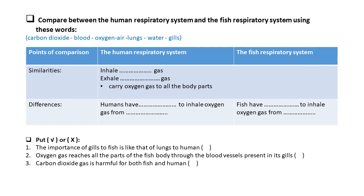True or false — the importance of gills to fish is like that of lungs to humans: true. Oxygen gas reaches all parts of the fish body through the blood vessels present in its gills: yes. Carbon dioxide gas is harmful for both fish and humans: yes. Great job.